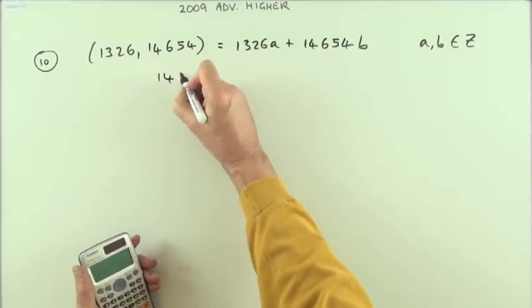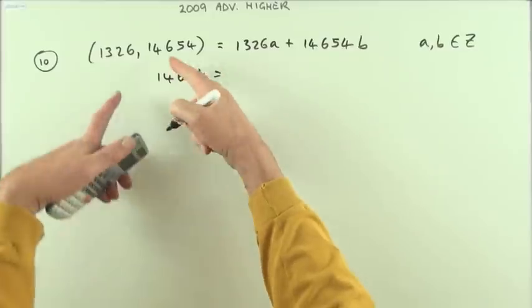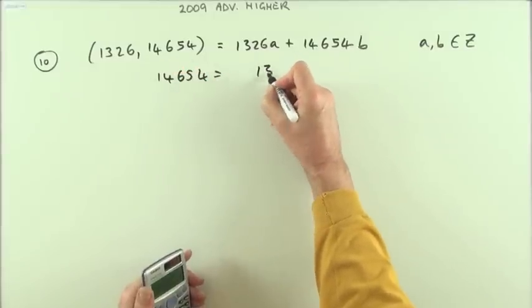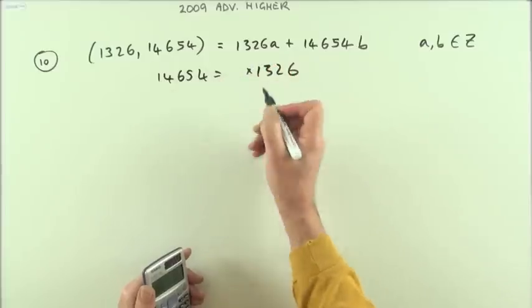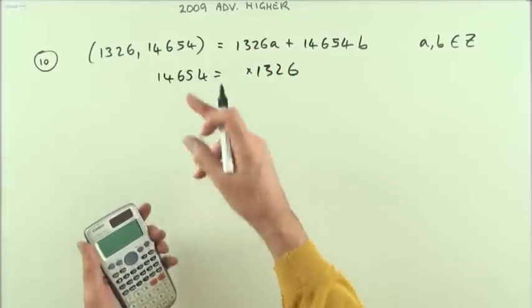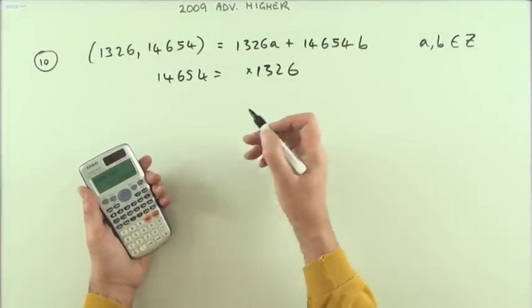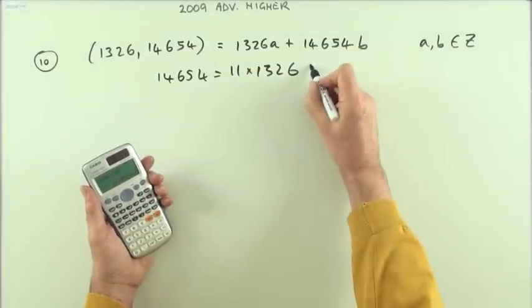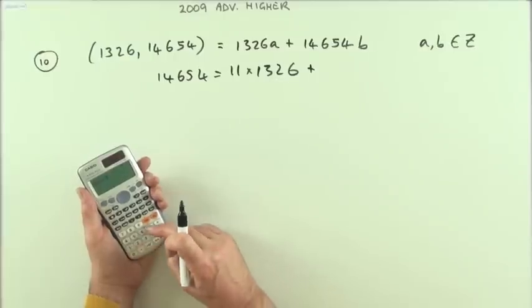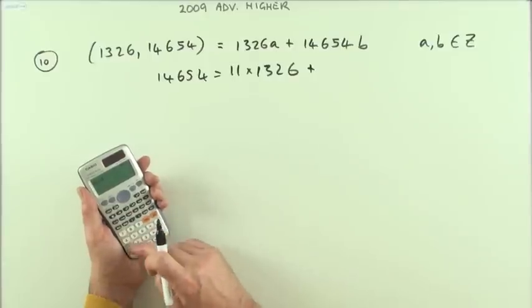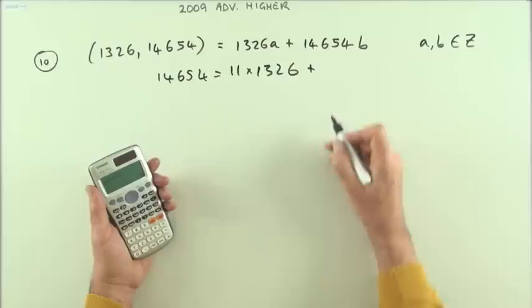So 14654 being bigger than 1326 must be some multiple of it. No heroics here, I'm just going to use my calculator, and that gives me 11, so it'll be 11 times it, plus, just take away that 11 and multiply it back by the 1326, 68.